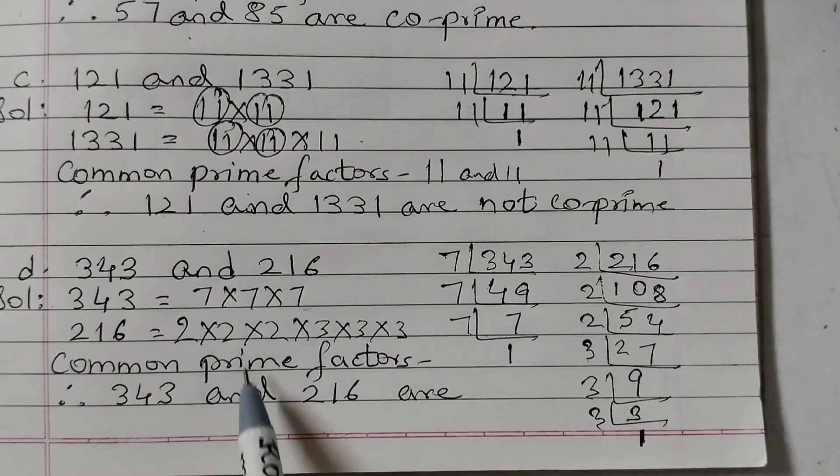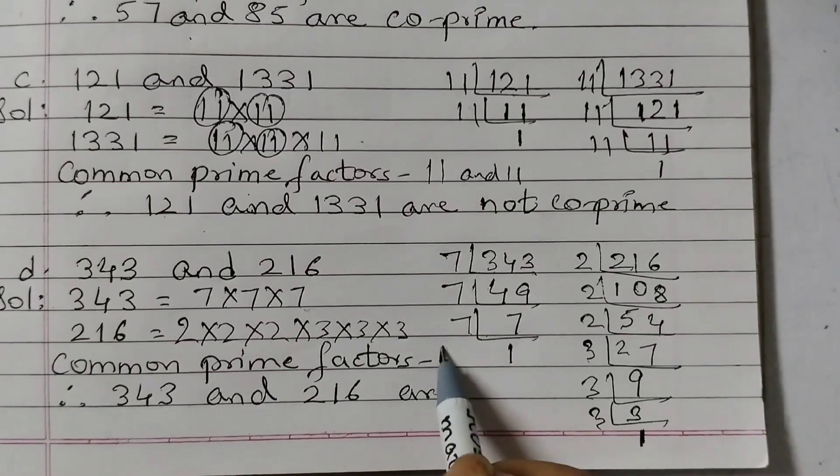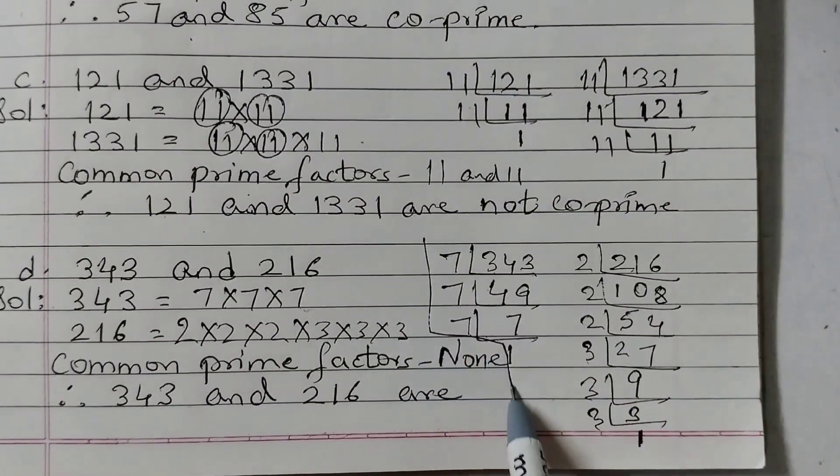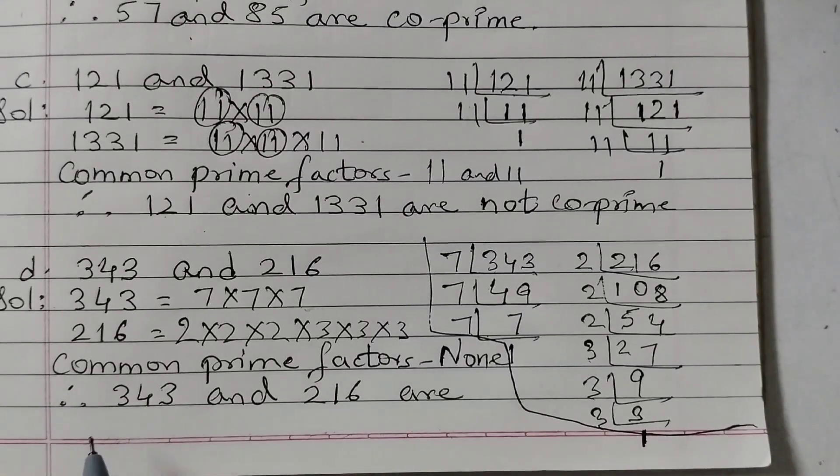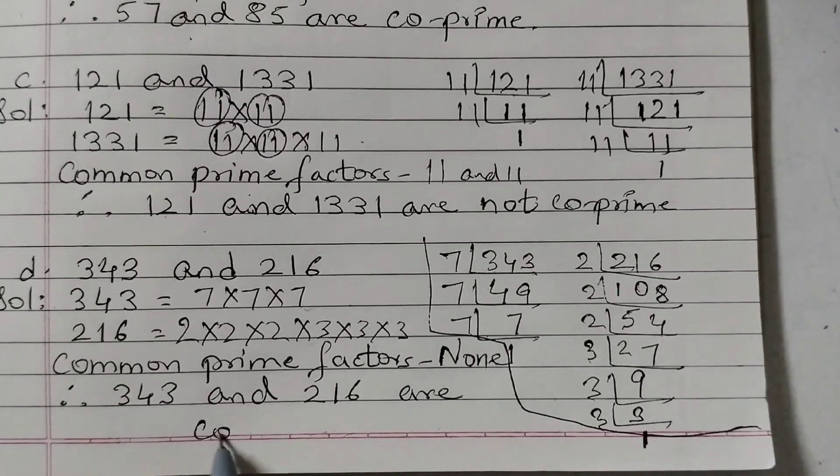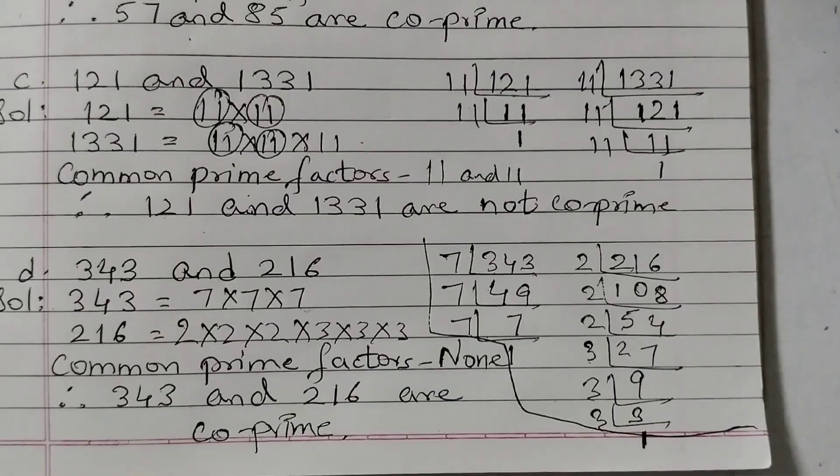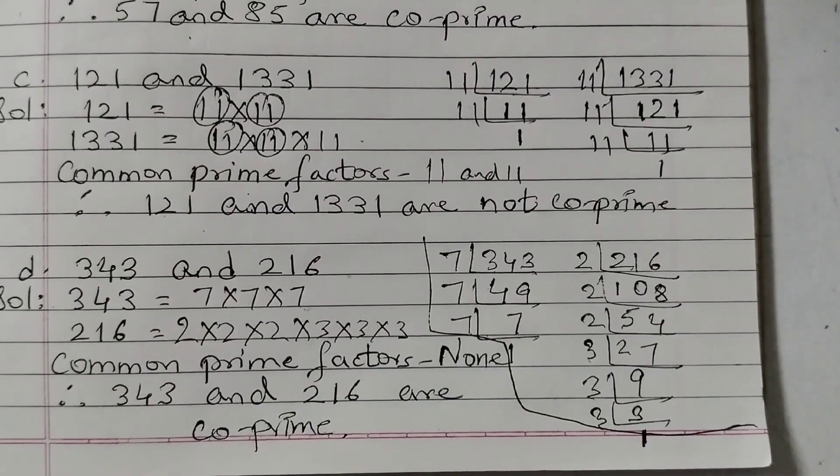7, 7, 7. Here 2 and 3. So there are no common prime factors. So here we will write none. This is our rougher prime factorization none. So since there are no common factors, therefore 343 and 216 are co-prime. These are co-prime numbers. With this we complete question number 1. Thank you.